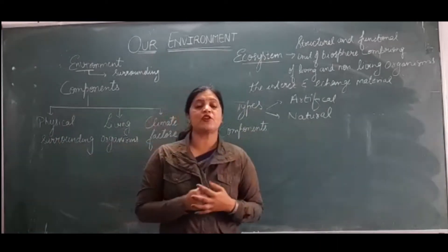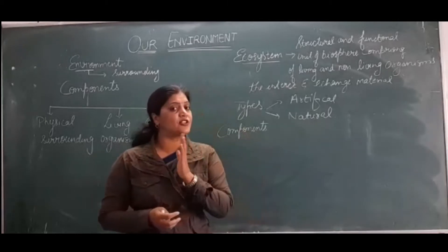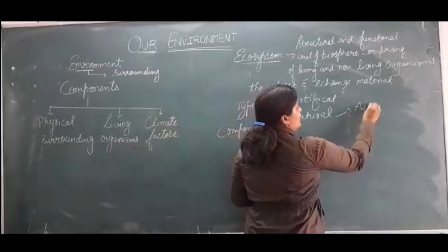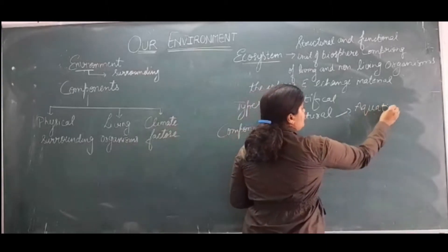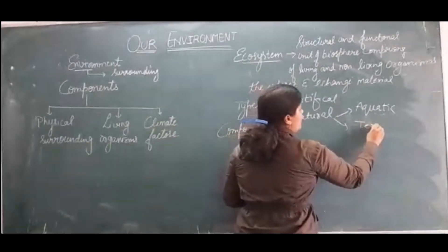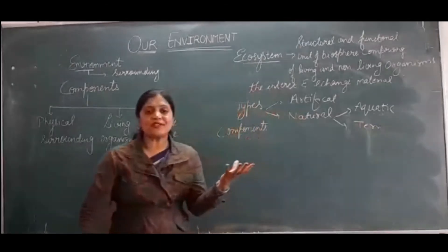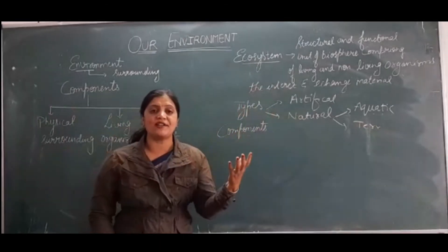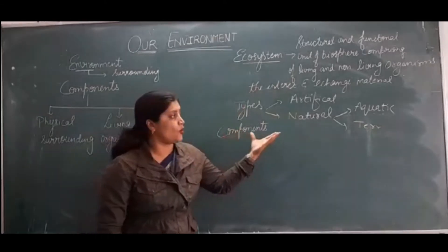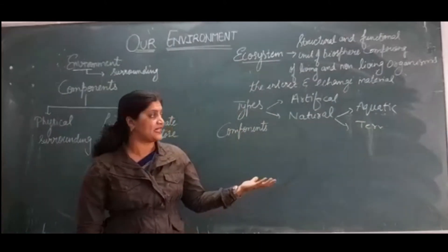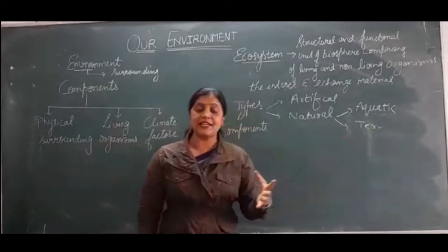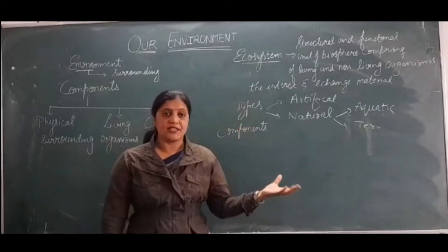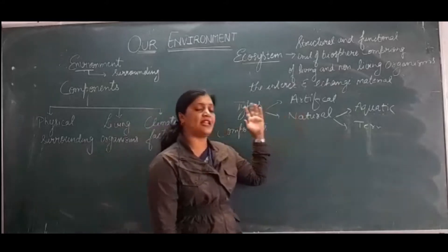In nature, the ecosystems which are present are further divided into two parts: aquatic natural ecosystem and terrestrial ecosystem. In aquatic ecosystems, examples are ponds, rivers, and oceans. And in terrestrial ecosystems, examples are grassland, forest, and deserts.